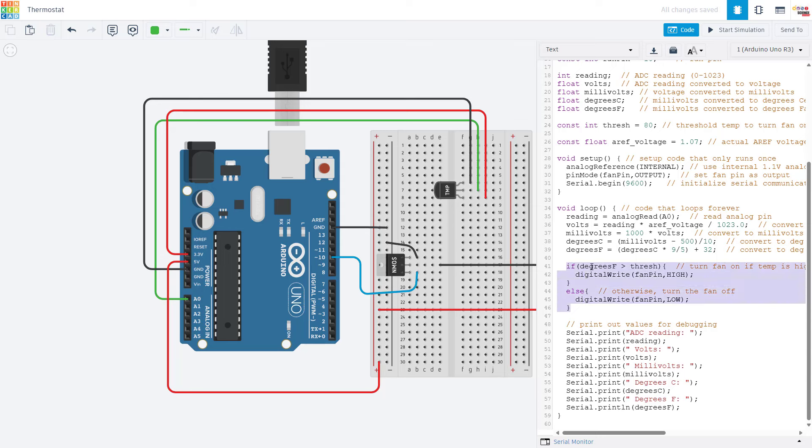We have an if-else statement where we compare our temperature reading, I am using degrees Fahrenheit because I'm based in the US, but you could use Celsius here instead, to that threshold variable that we set. And if the temperature is greater than the threshold, then we use the digital write command to turn the fan on. Else, meaning it is lower than threshold, then we use the digital write command to turn the fan off. So that is very simple on-off thermostat behavior to use the fan in this case for cooling.